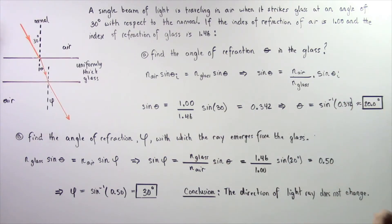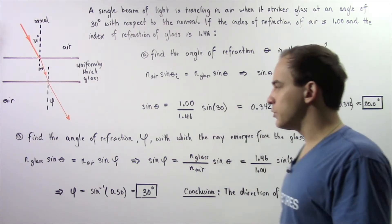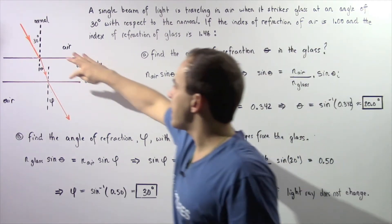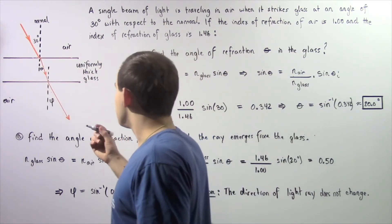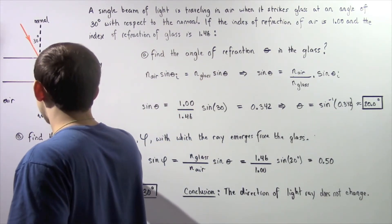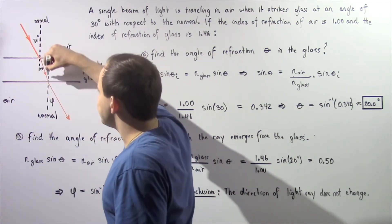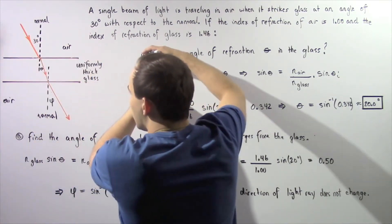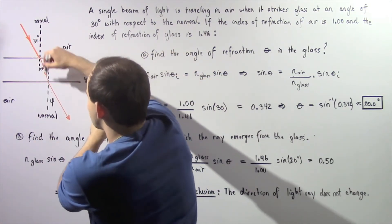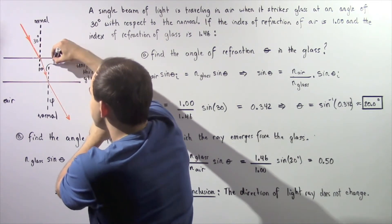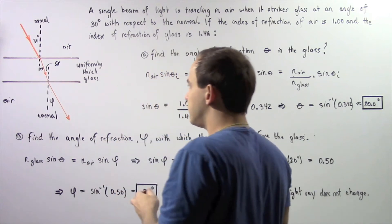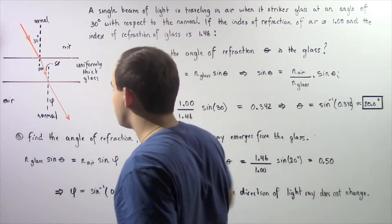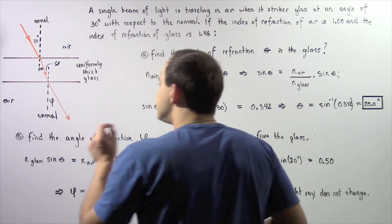Now let's move on to Part B: find the angle of refraction phi with which the ray emerges from the glass with respect to our normal line. By the geometry of the diagram, because the two surfaces are parallel and we have the following straight line, this interior angle theta is equal to the angle theta at the bottom surface. So to calculate angle phi, we once again apply Snell's Law.